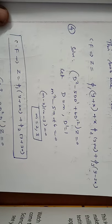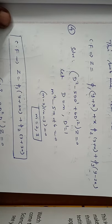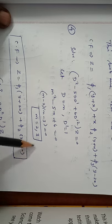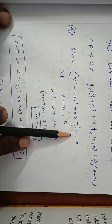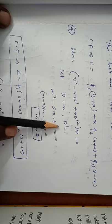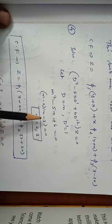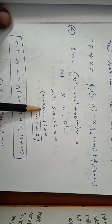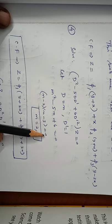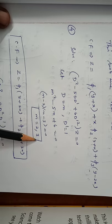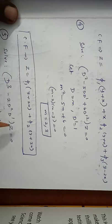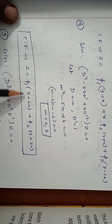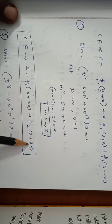Problem 4: solve (D² - 5DD' + 6D'²)z = 0. Let D = m, D' = 1. The auxiliary equation is m² - 5m + 6 = 0, which factors as (m - 2)(m - 3) = 0, giving m = 2 and m = 3. These two roots are different, so the complementary function is z = φ₁(y + 2x) + φ₂(y + 3x).